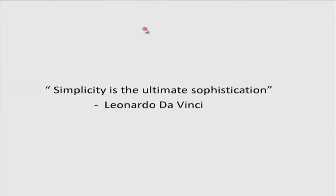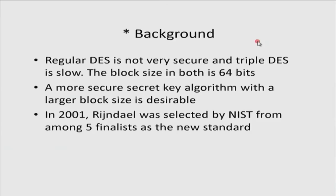One of the nice things about AES is that it is a very simple algorithm. Around the end of the last century, around 1995 or so, it became increasingly obvious that DES — the algorithm used for secret key cryptography for almost 40 years — was not very secure. There were various attacks on it: brute force attacks, linear cryptanalysis, differential cryptanalysis, and others. There was also triple DES, but the feeling was that it had a limited time left before becoming insecure, as many attacks on it were successful.